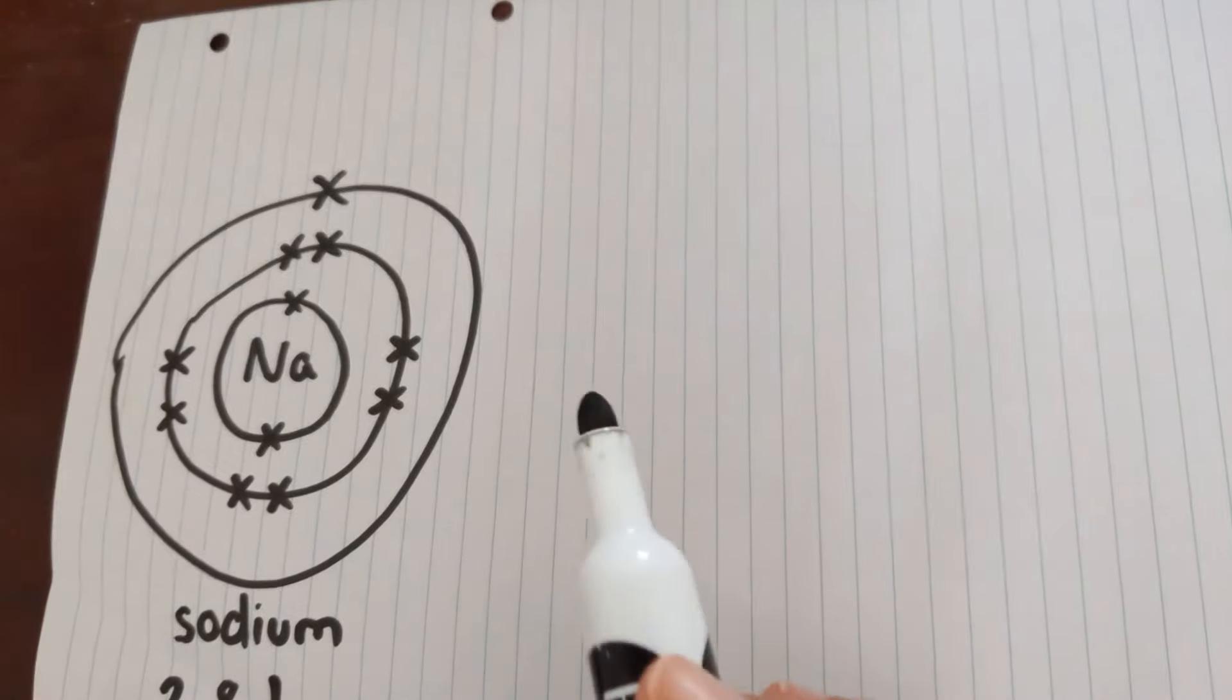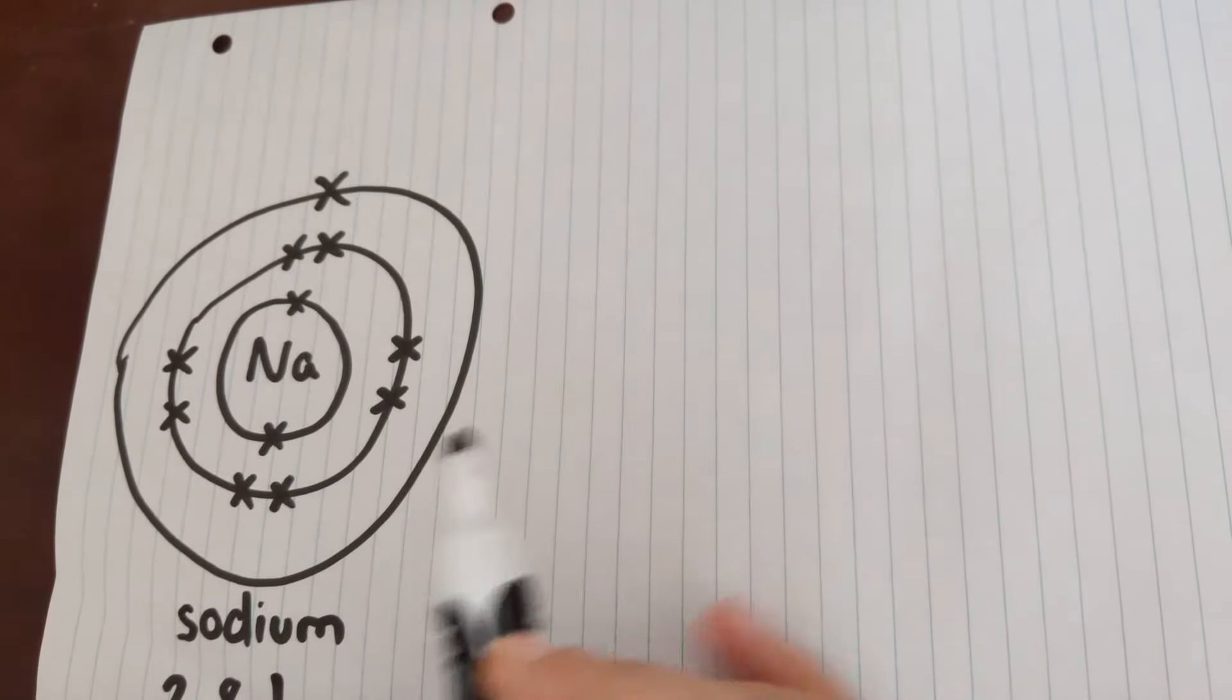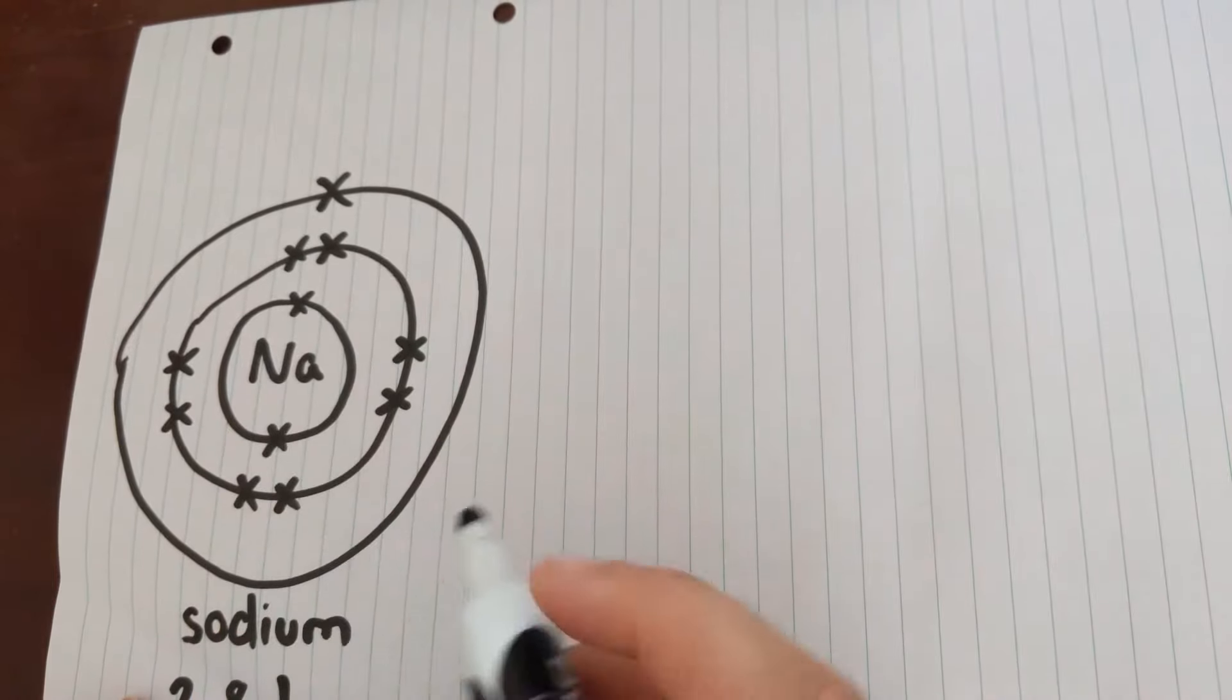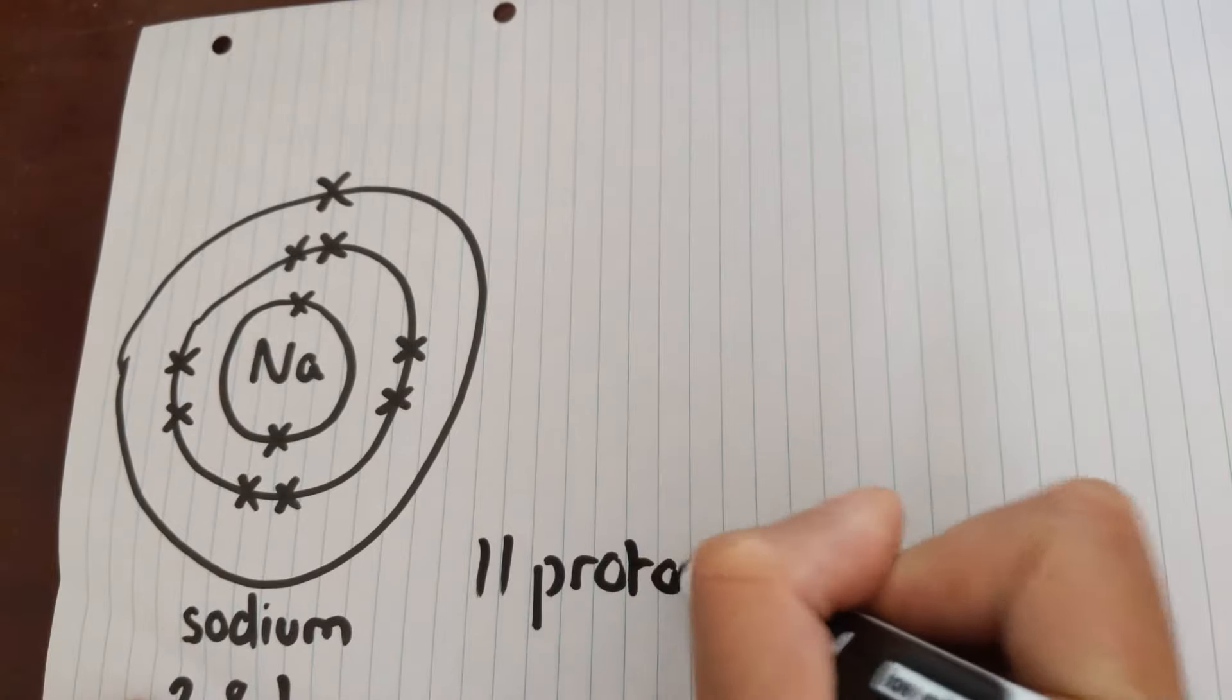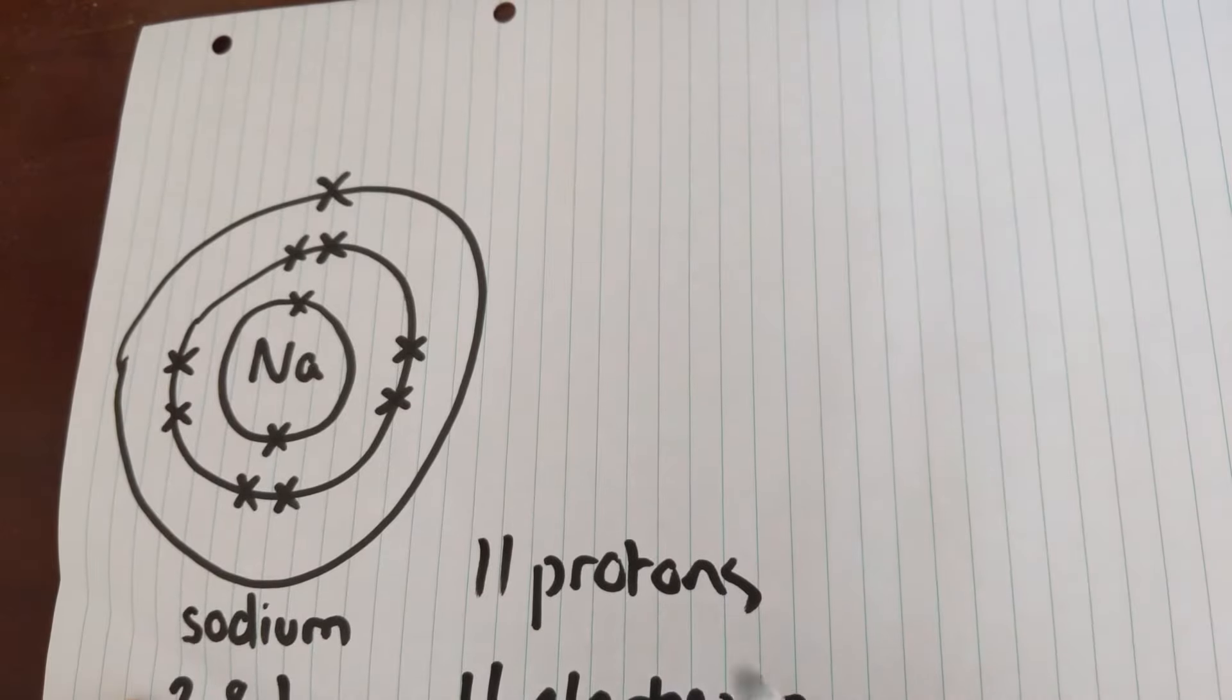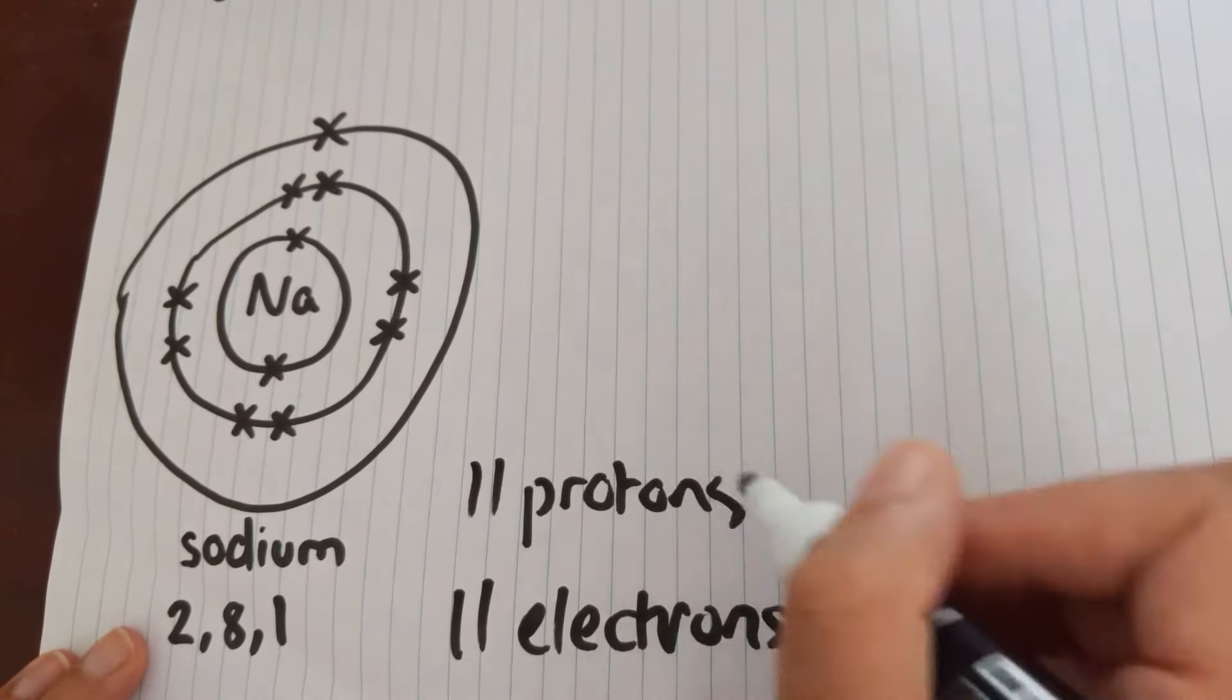So when we turn an atom into an ion, what we're doing is we're turning it into a charged particle. At the moment, it has 11 protons and it has 11 electrons. Since each proton has one positive charge and each electron has one negative charge, the charges are balanced.